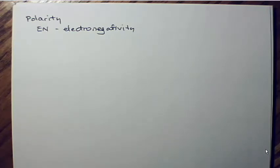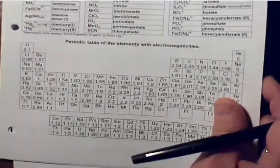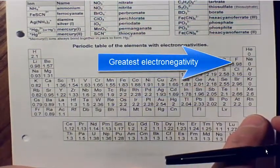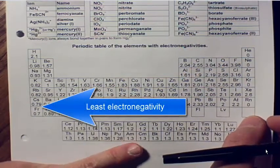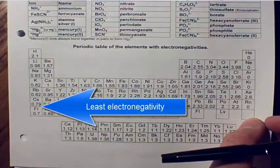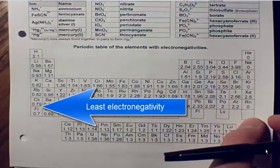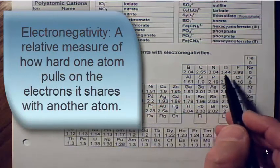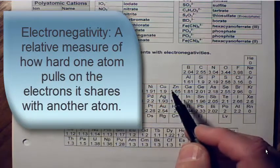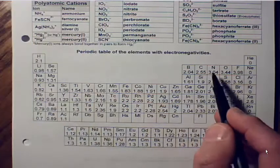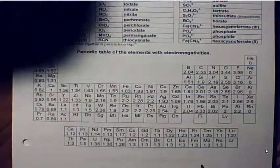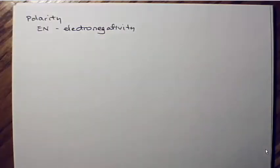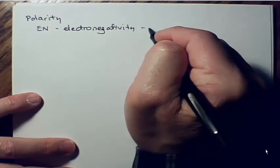If you look in your set of test references, you'll find a periodic table that has electronegativities listed on it. There are several different ways to determine electronegativity — it's a relative number. I think this is called the Lewis electronegativity. It's relative because it has to do with how hard one atom pulls on the electrons it shares with another, so there are no units of measurement that really fit with this. Electronegativity has to do with individual atoms.